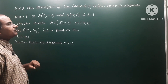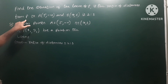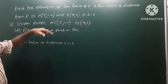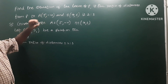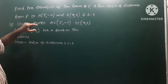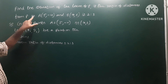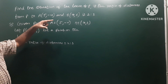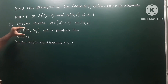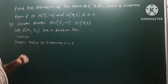Find the equation of locus of P if the ratio of distances from P to A and B is 2 is to 3. Given points A and B, let P(x1, y1) be a point on the locus. The given ratio of distances from P to A and P to B is 2 is to 3.